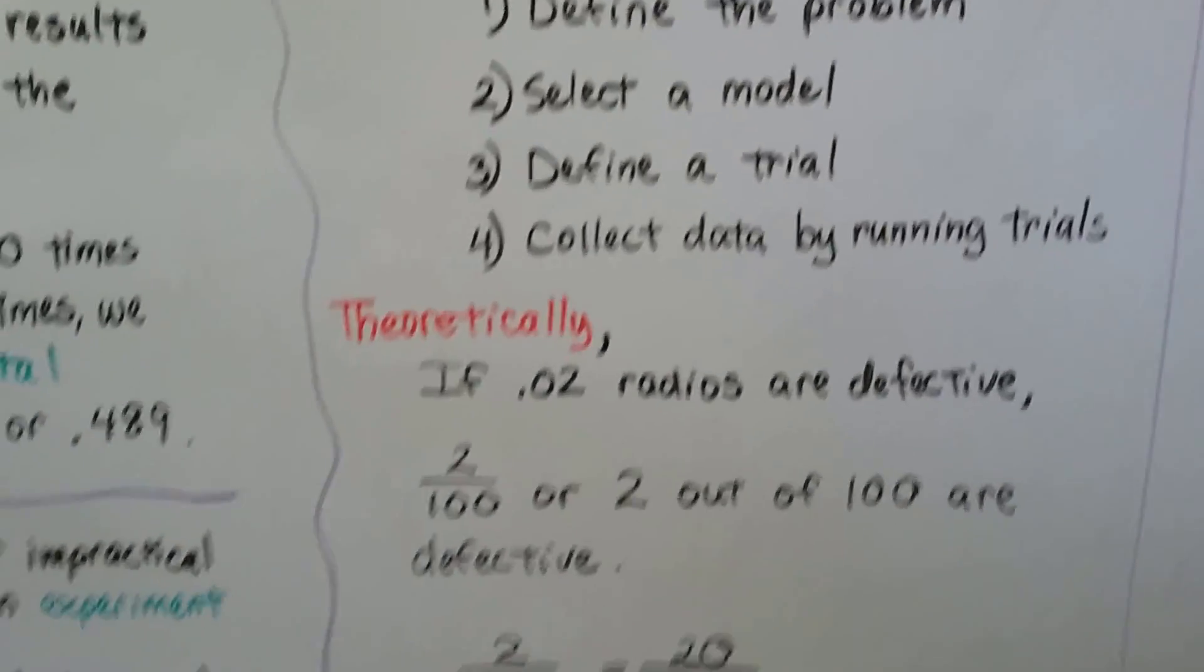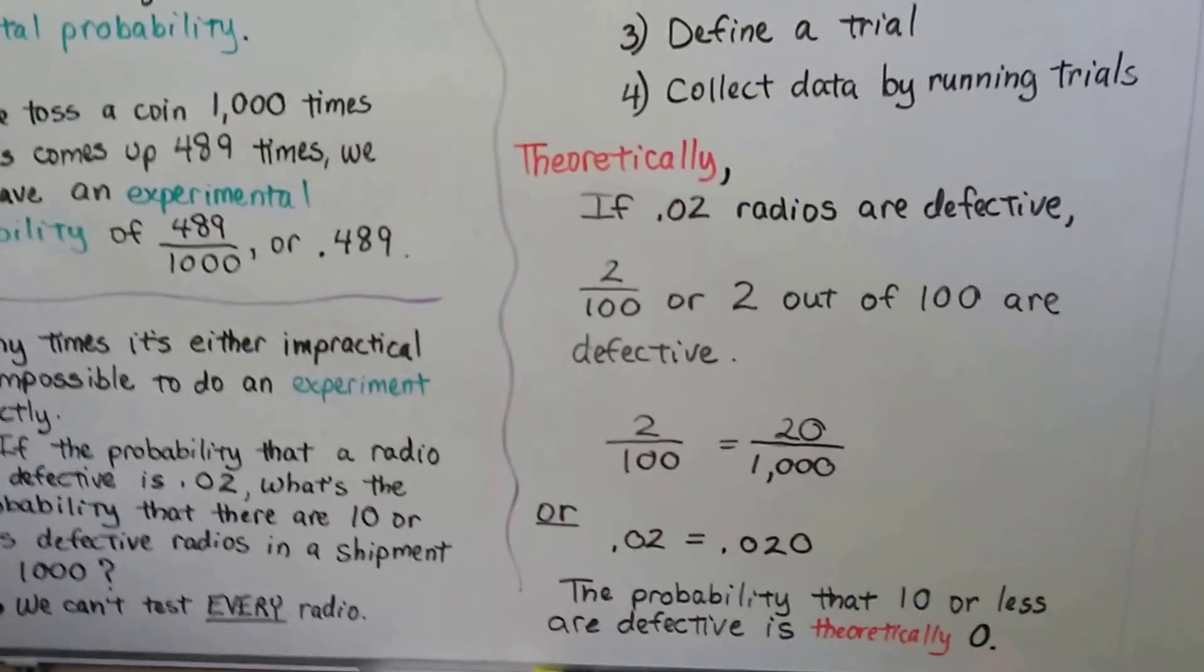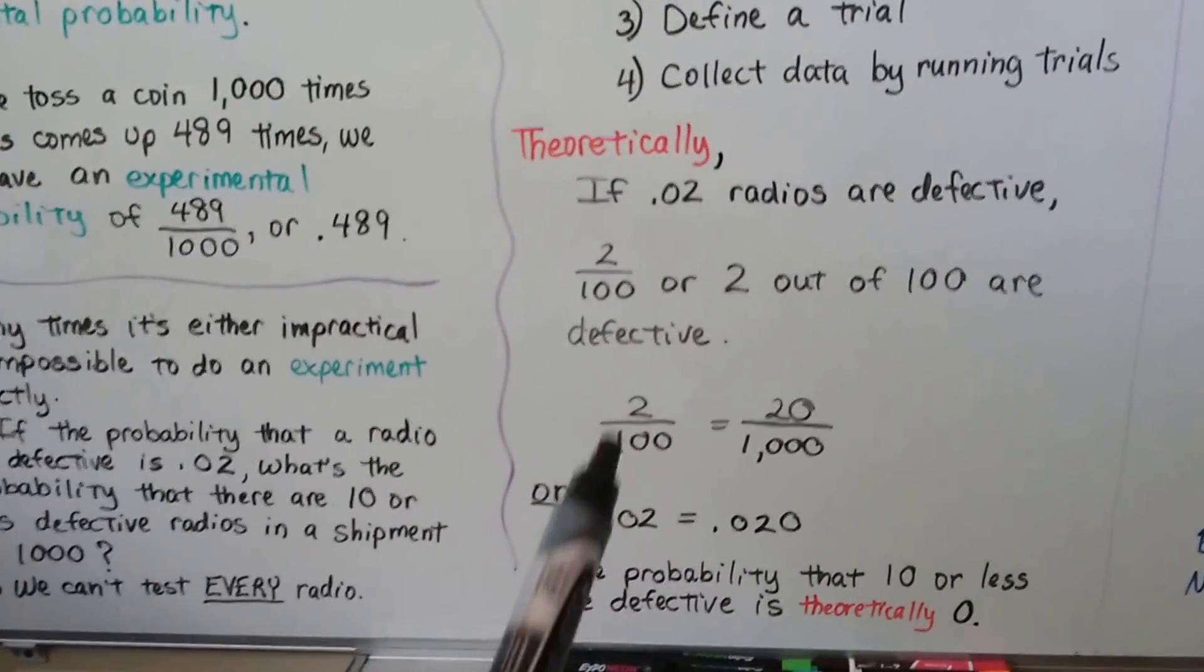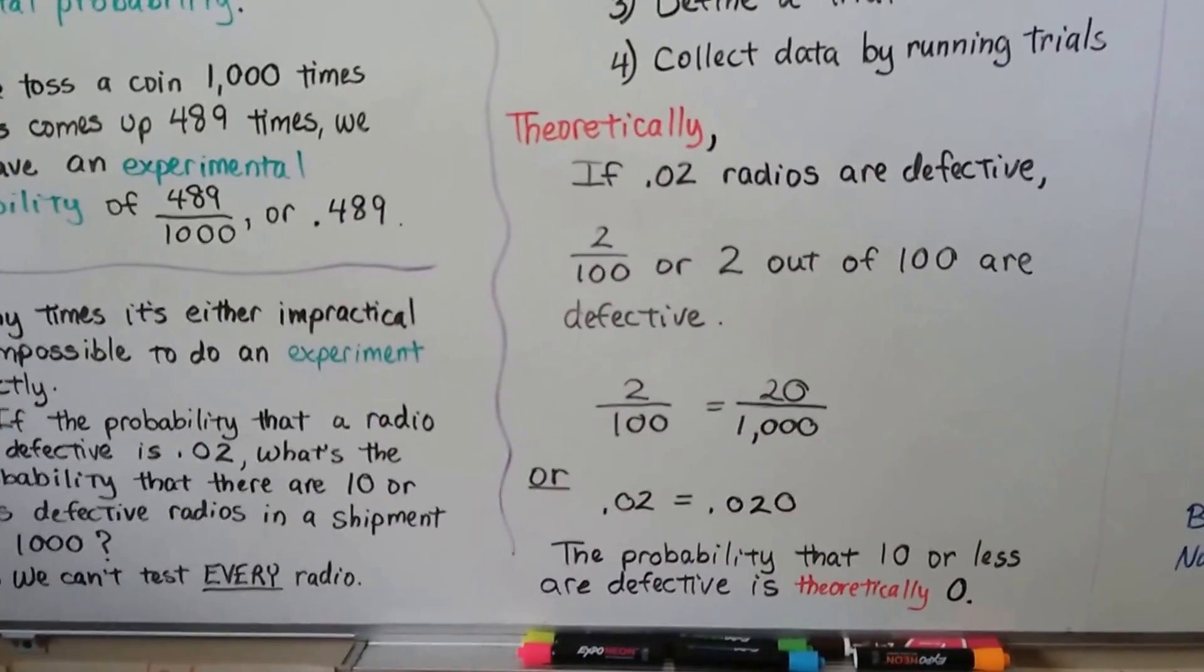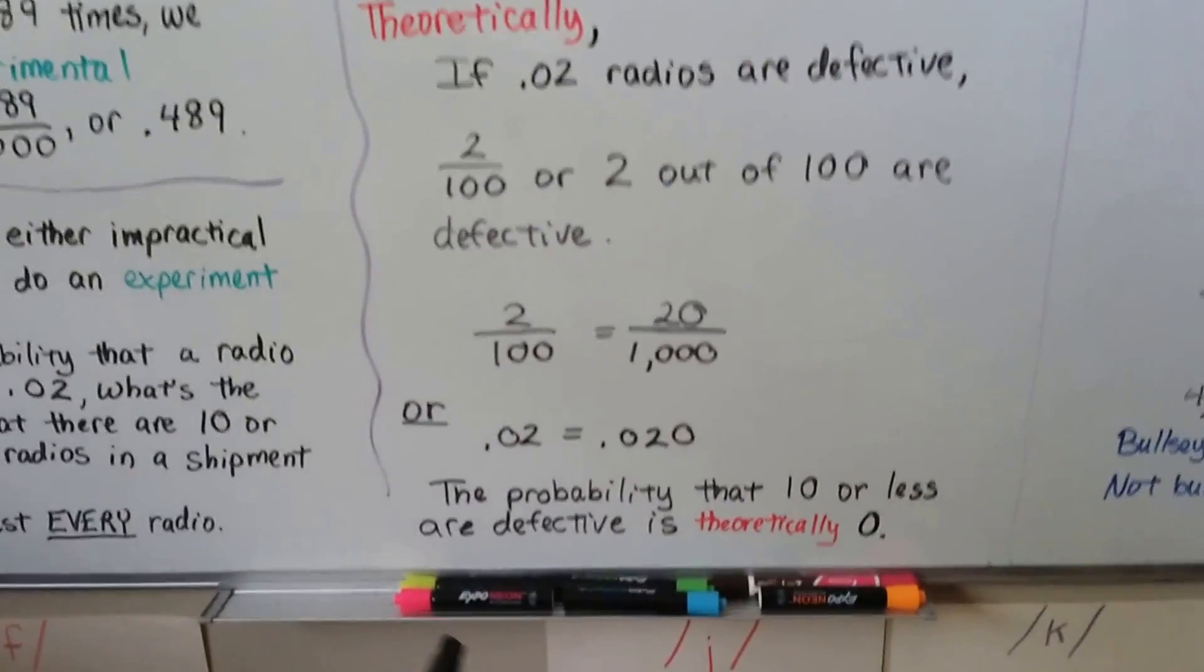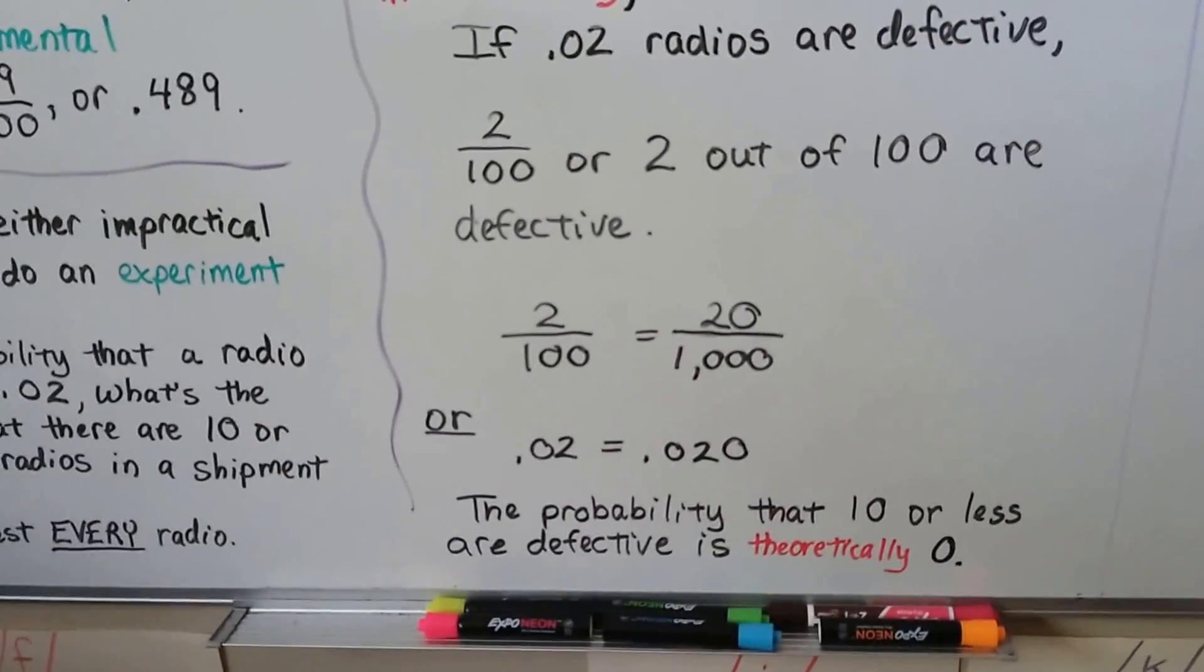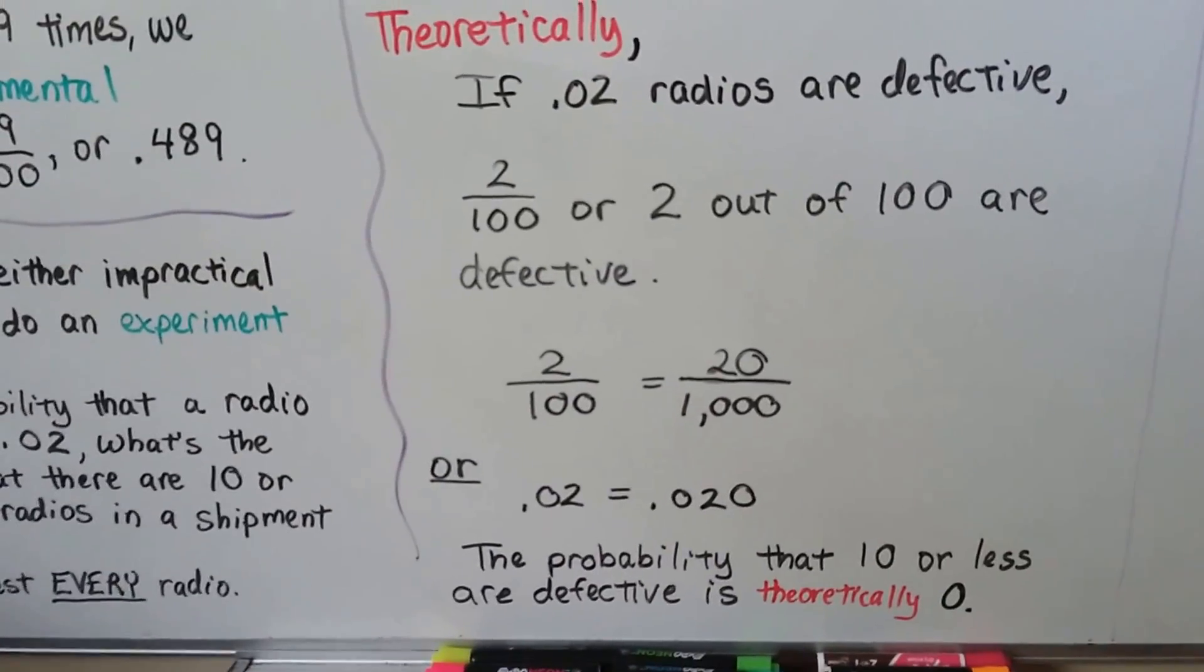So theoretically, for this radio, if 0.02 radios are defective, that means two one-hundredths or two out of 100 are defective. So for a thousand, that means twenty one-thousandths are defective, or .020. The probability that ten or less are defective, because that's what it said, ten or less, is theoretically zero, because we figure twenty would be defective.